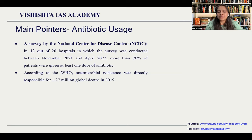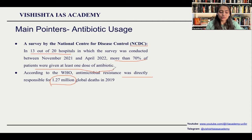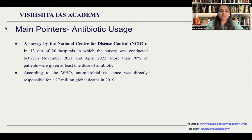Mains pointers: antibiotic usage. Antibiotic resistance has been very high in India. According to a WHO report, antimicrobial resistance was directly responsible for 1.27 million global deaths. According to a survey by NCDC, in 13 out of 20 hospitals, more than 70% of patients were given at least one dose of antibiotics. Antibiotic resistance in India has been happening due to incessant use of antibiotics, non-completion of course, and non-adherence to the Watch, Aware, and Reserve (AWaRe) drug criteria. You can note down these Mains pointers.